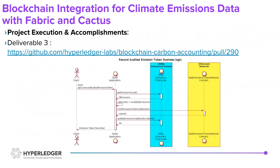The third deliverable was to prevent the double minting problem. Since there were two blockchains involved — Ethereum and Fabric — the previous implementation had a double minting problem, which I solved with a data lock chaincode implemented in Fabric, and pushed the implementation with a pull request.